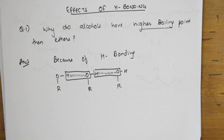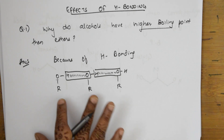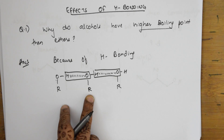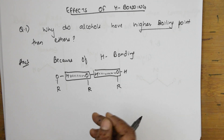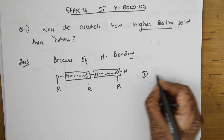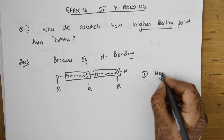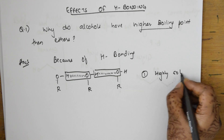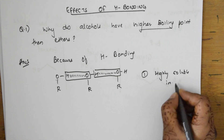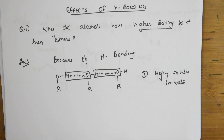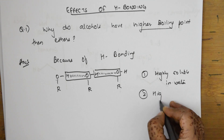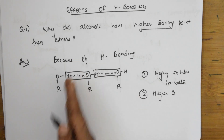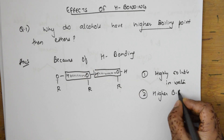There is intermolecular hydrogen bonding existing between two alcohol molecules. Because of this, alcohols are highly soluble in water, and they have a higher boiling point because energy is needed to break all these intermolecular hydrogen bonds.